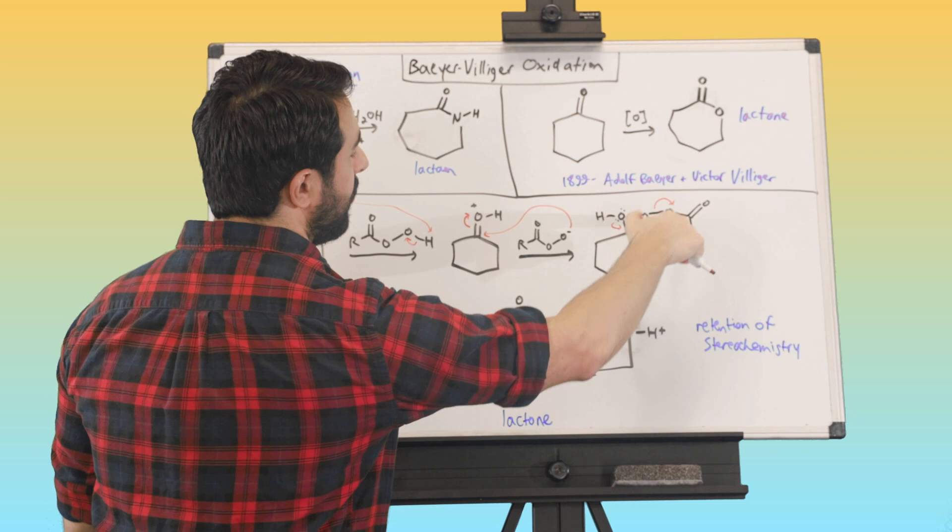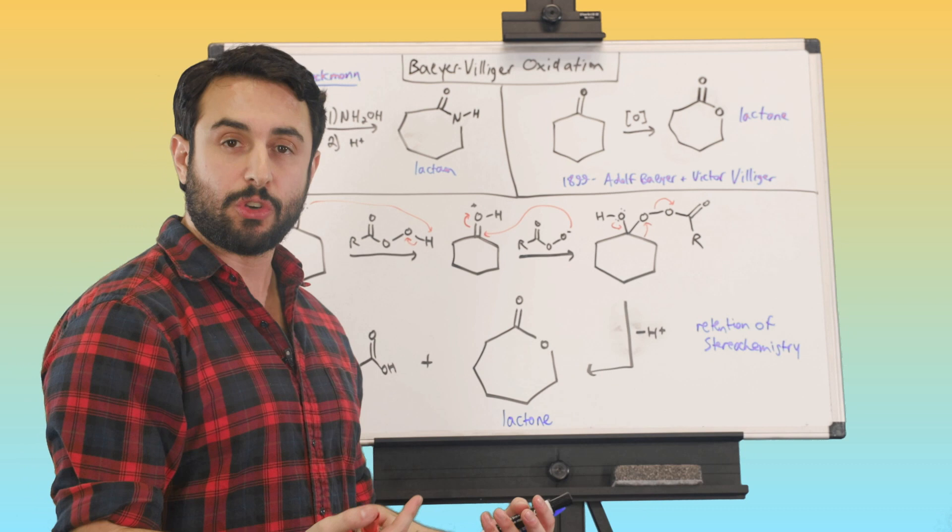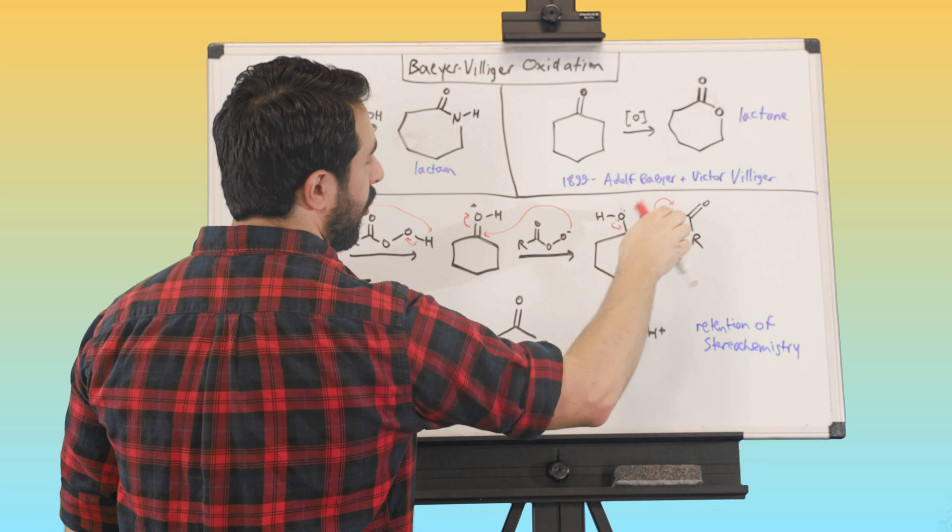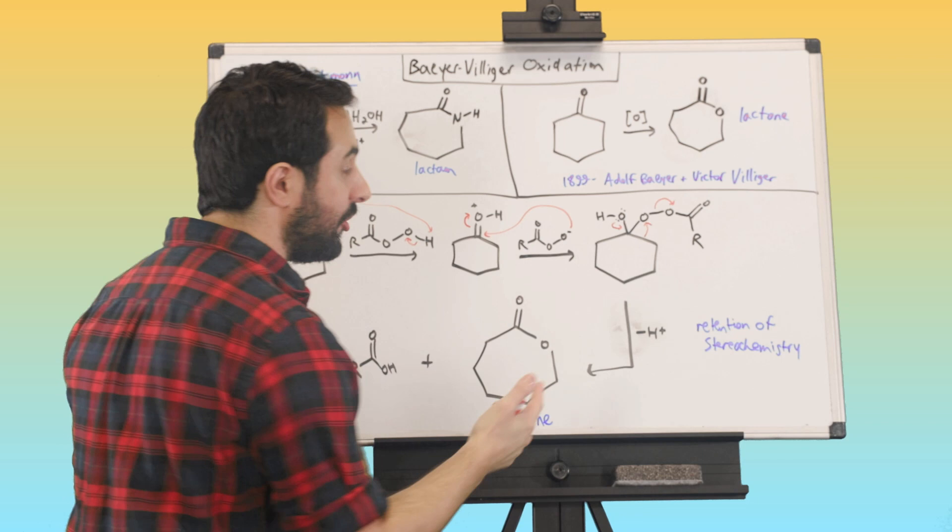And so what happens is we get that rearrangement, and we get our seven-membered ring here. If this carbon is now attached to that oxygen instead, that oxygen has now essentially inserted itself into the ring. And we end up, right, if this, now we don't have a paracid anymore. We just have that part. That's just now a regular carboxylic acid. So that's not going to promote any more reactions, really. So we did that, and we've got our lactone. So that's the basic mechanism here.